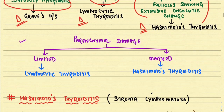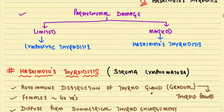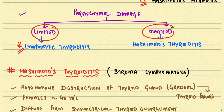One thing we must understand: in autoimmune thyroid disease, if the parenchymal damage is limited, it reflects lymphocytic thyroiditis. But if there is marked parenchymal damage — damage to the thyroid follicular cells — it points towards Hashimoto's thyroiditis.